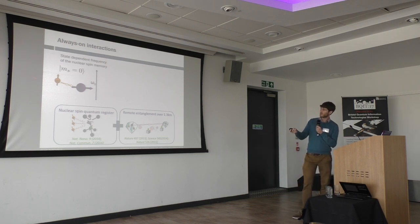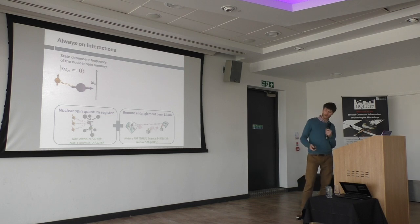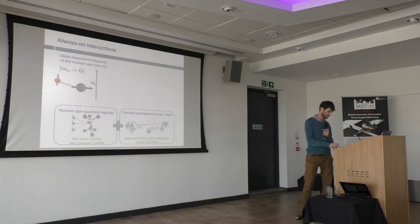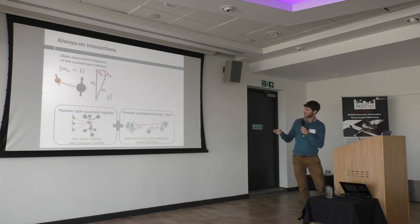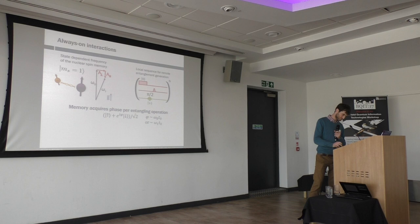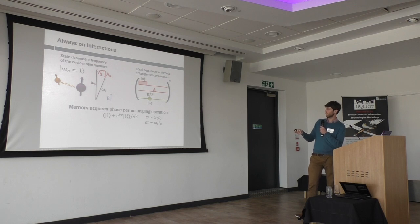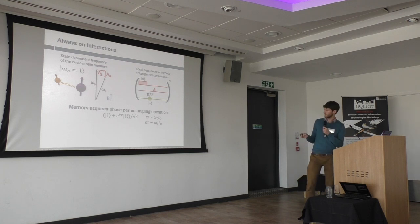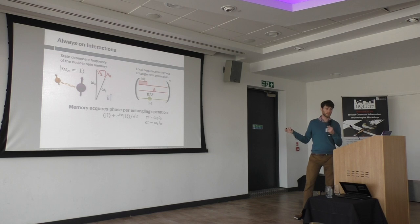I'll talk specifically about why this is tricky for NVs. We have this coupling for free between our nitrogen vacancy centre and the nearby nuclear spin, but we can't turn it off. That means when we're doing remote entanglement generation, the state of our carbon spin — where we've stored our state — is sensitive to the state of the NV. Specifically, because the NV acts like a little bar magnet, it locally changes the magnetic field that the nuclear spin experiences, causing it to precess around a different axis. The nuclear spin picks up a different phase depending on whether the nitrogen vacancy happens to be in zero or one.